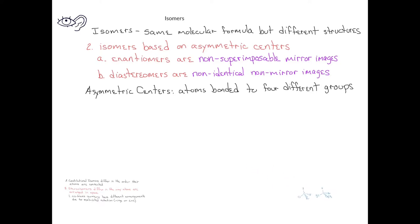Let's look at a few molecules that do not have asymmetric centers. In this first one, the carbon has a hydrogen, a bromine, one methyl group, and a second methyl group. Because it has two groups attached to it that are the same, this carbon would not be an asymmetric center.